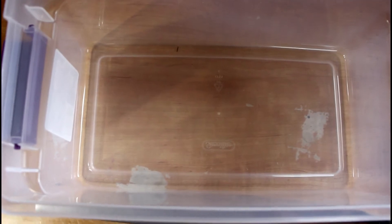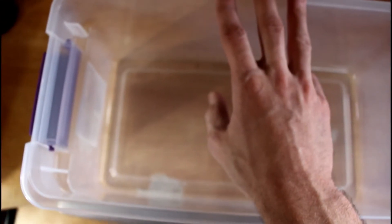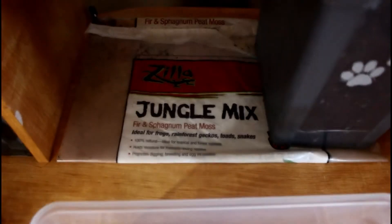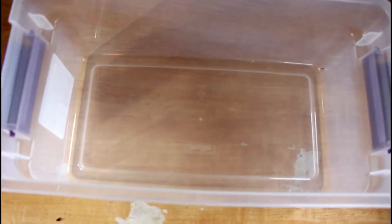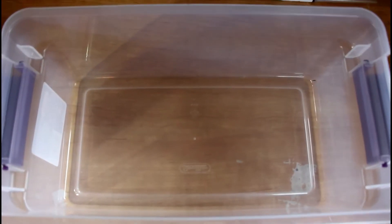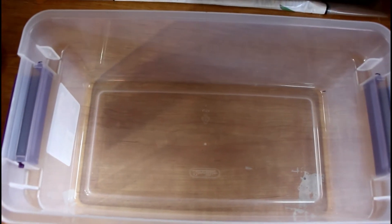So with that, let's get started. We're going to need a few things. This right here is a six quart container. And what we're going to be using for a substrate is the Zilla Jungle Mix. This is made with fir and sphagnum peat moss. I personally prefer this one because it's light and airy, and it's going to hold humidity extremely well.